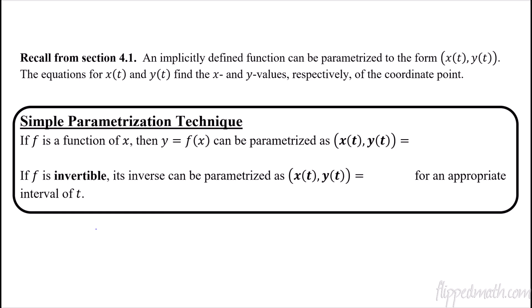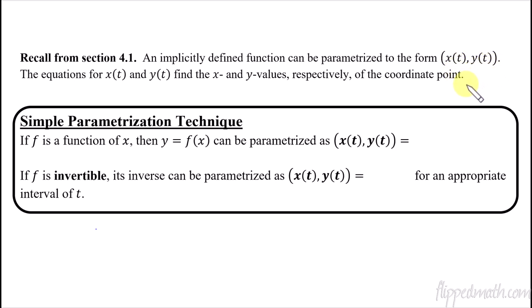First, let's remind ourselves what we did in the very first lesson of this unit. We took a look at implicitly defined functions and talked about how you can put them in parametric form, where each coordinate value has its own equation — you have an x of t and a y of t — equations that help you figure out the coordinate points for every single x and y value.